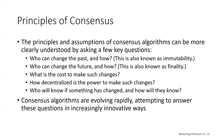Let's talk about some of the general principles of consensus. The principles and assumptions of consensus algorithms can be more clearly understood by asking a few key questions: Who is in charge of changing the past, and how? Who can change the future and how — which you can think of as finality? What is the cost to make those changes? How decentralized is the power to make those changes? And who will know if something has changed — how will we know if a hacker changed the past? Consensus algorithms attempt to answer these questions, and they are evolving considerably.